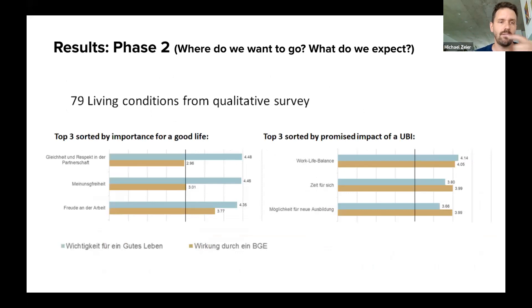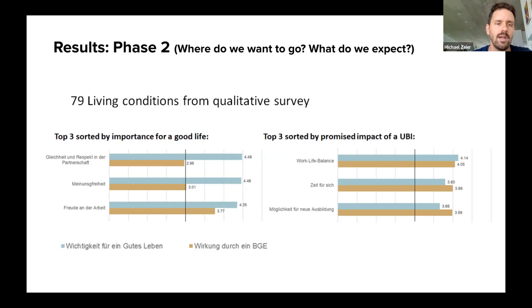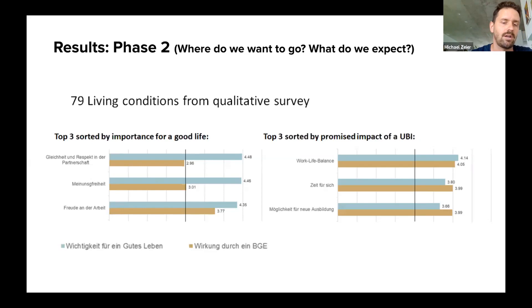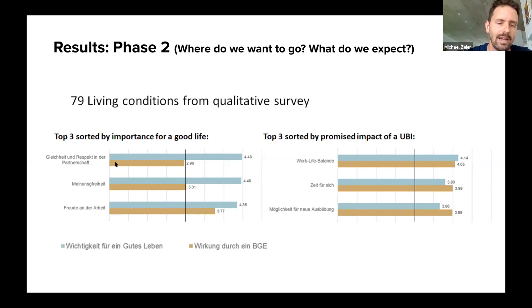In the second phase, from all the answers people gave, we created 79 very different living conditions. We ranked them by how important they are for a good life, and how much impact UBI could have on each condition. The blue line is the importance for a good life, and the golden line is the impact of UBI that people think it would have.